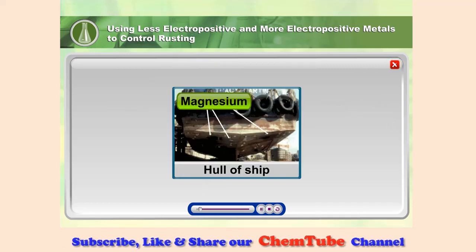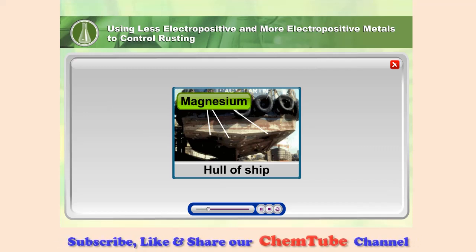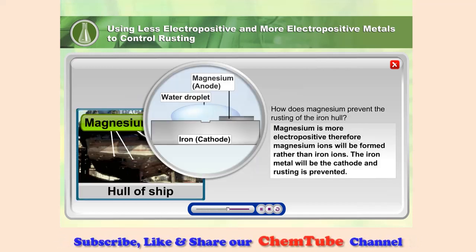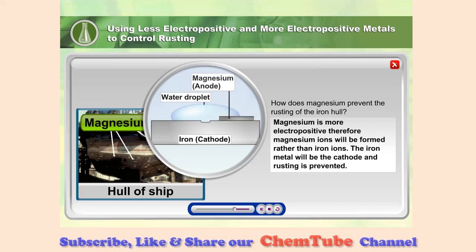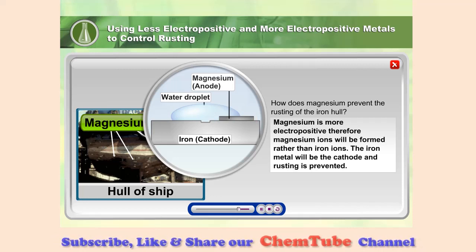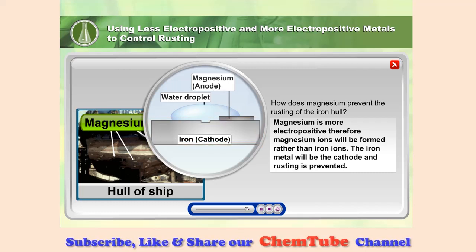The magnesium blocks attached to the ship's hull are used to control rusting of the iron hull. Magnesium is more electropositive, therefore magnesium ions will be formed rather than iron ions. The iron metal will be the cathode and rusting is prevented.